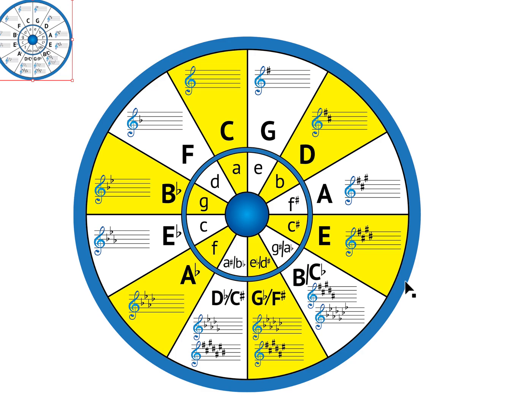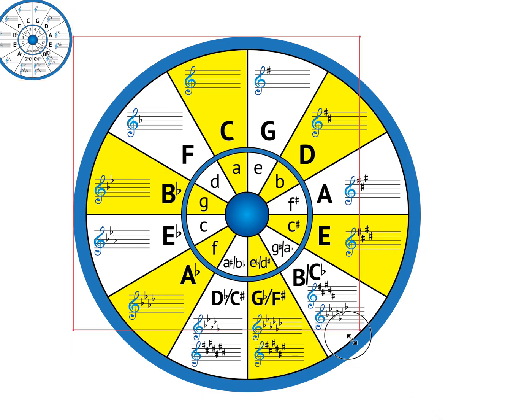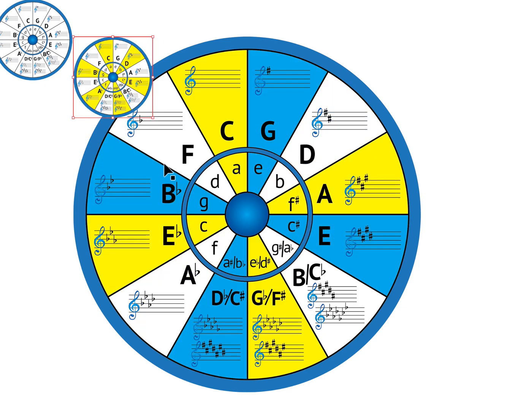These scales are symmetrical, so there are really only two whole tone scales because when you look at them modally they are all constructed the same way — whole step, whole step, whole step, and so forth. I'll demonstrate these on the guitar diagrams after we're done looking at the circle.